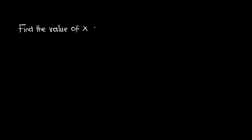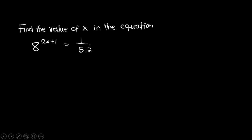So we have to find the value of x in the equation: 8 raised to the power 2x plus 1 is equal to 1 over 512. Now remember, this is under indices.